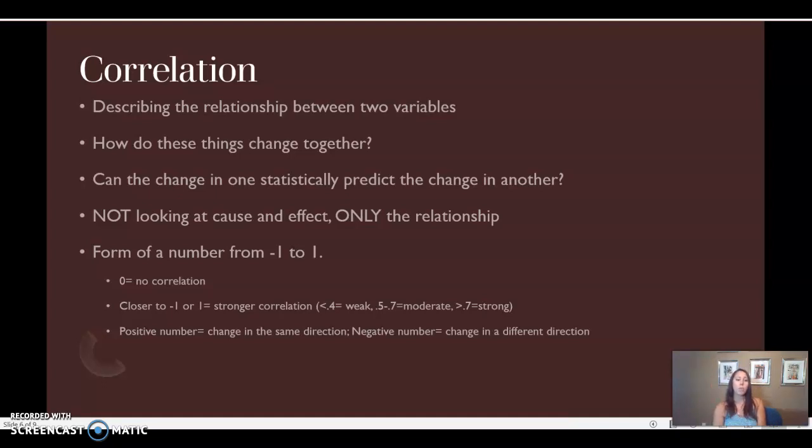Now, when you have correlations written up, they're going to be in the form of a number from negative one to positive one. Zero means no correlation. Nothing was significant there. The closer that you get to negative one or one, the stronger the correlation. Anything less than 0.4 is weak or negative 0.4. Anything between 0.5 and 0.7 or negative 0.5 and 0.7 is moderate. Anything above 0.7 or negative 0.7 is strong.